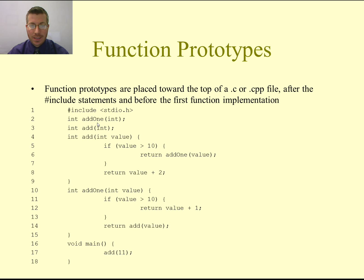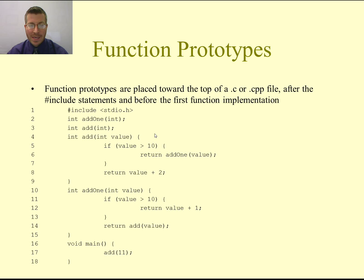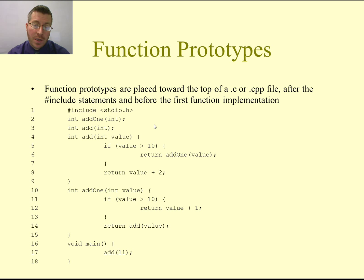The compiler gets down to line two and says: now I know that add1 takes an integer as a parameter and returns an integer, and add takes an integer and returns an integer. Then it finds the implementation of add on line four. When it gets to line six and sees return add1 passing in an integer, it says: I know there is a function that returns an integer, takes an integer, and is named add1, because on line two the programmer gave me a promise — a guarantee that there will be a function called add1 that takes an int and returns an int. As the compiler continues, it then finds that implementation on line 10.